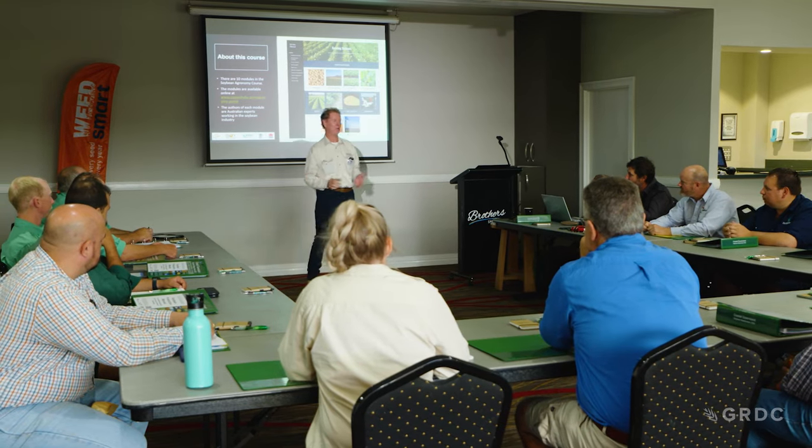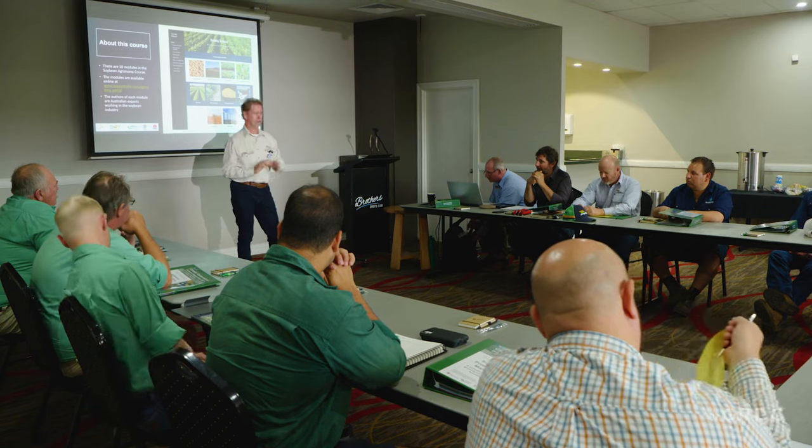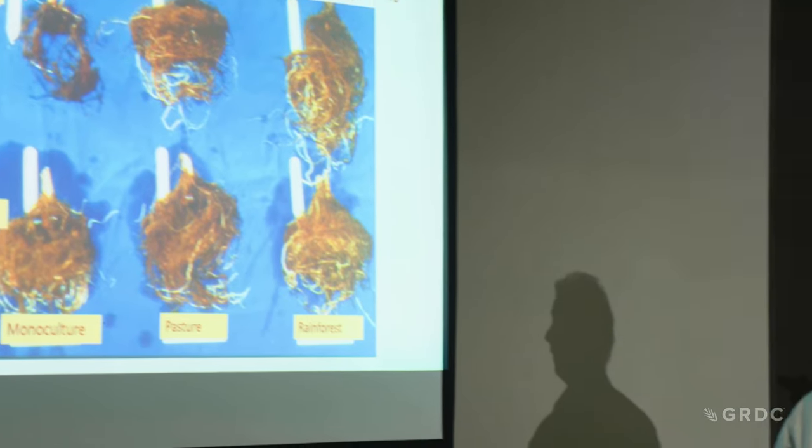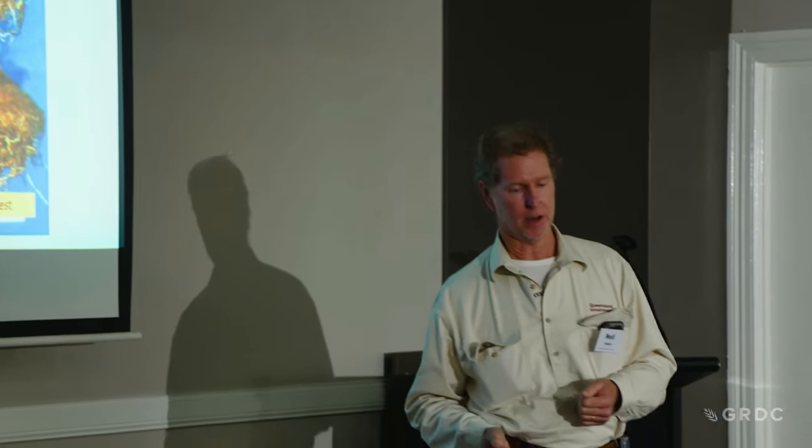Soybeans are a rotational option in our sugar cane farming system and a key pillar in maintaining soil health in our coastal farming systems. Initially in the early days, we weren't promoting it as a grain crop — it was just to get growers familiar with it as a rotation crop in the sugar system. A lot of growers were just green manuring it, but then it became very obvious that we could grow it for grain.